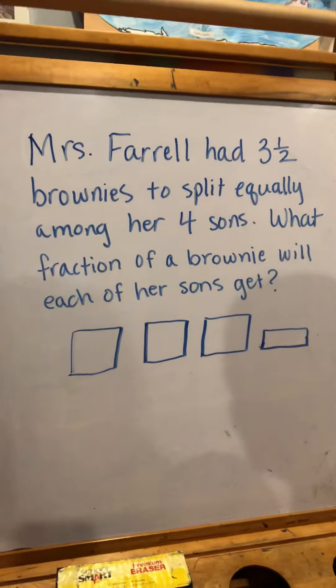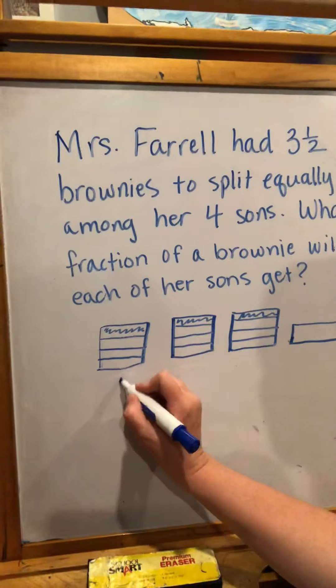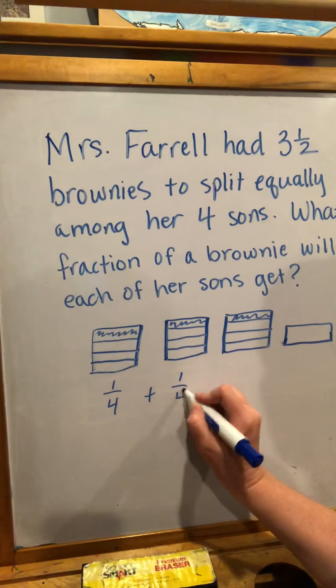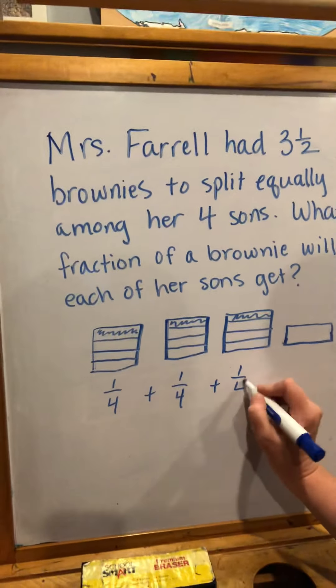My first thought was to break each of these up into four parts and then give each boy one part of each of those brownies. With these wholes, that was pretty easy to do because I just had to break it up into four parts. If I gave each boy one part of each brownie, we're looking at one fourth plus one fourth plus one fourth. That got a little trickier here with this half brownie because I'm dividing half into fourths. So really what I'm doing is taking one half and dividing that into four parts.